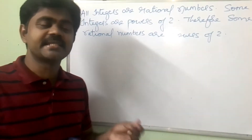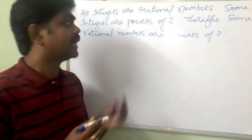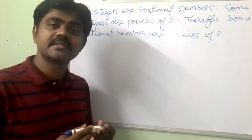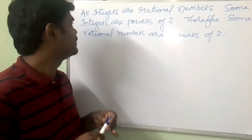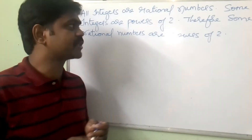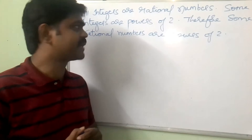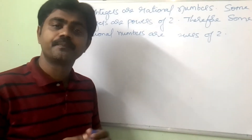Hello everyone. We see another example. All integers are rational numbers. Some integers are powers of 2. Therefore, some rational numbers are powers of 2.